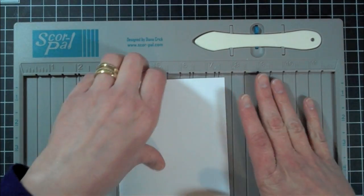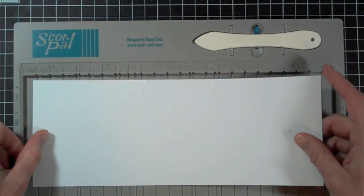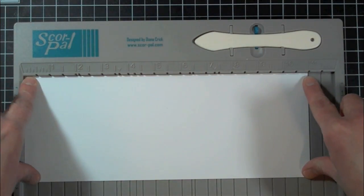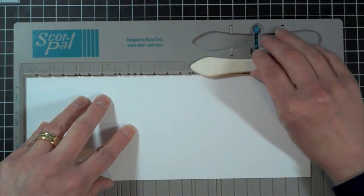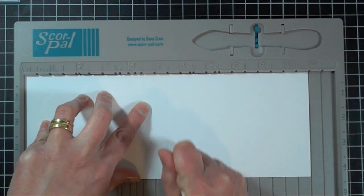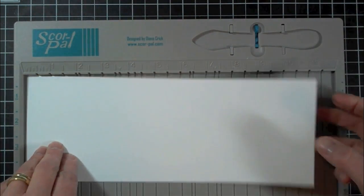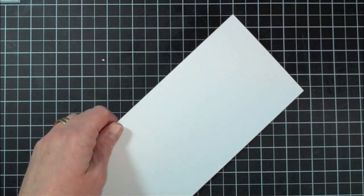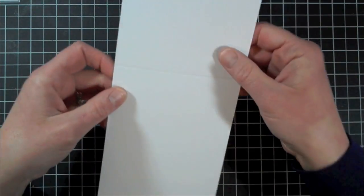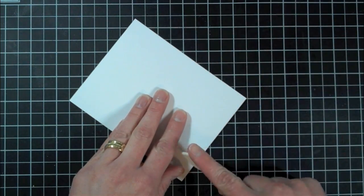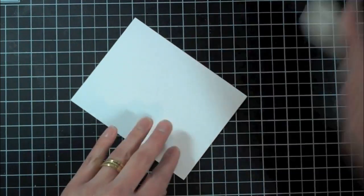First what we're going to do is I'm starting with paper tray ink cardstock and it's cut at four and a quarter by 11. I'm just going to use my score pal here to create my score line at five and a half inches. There we go.